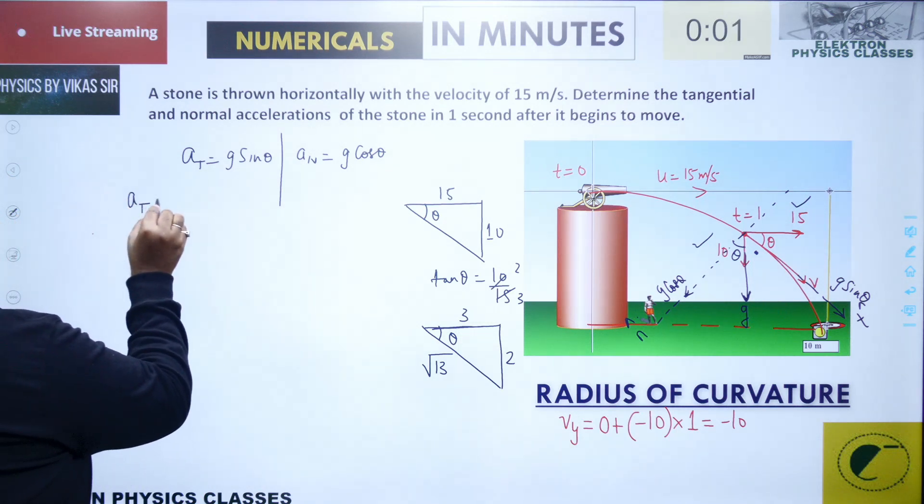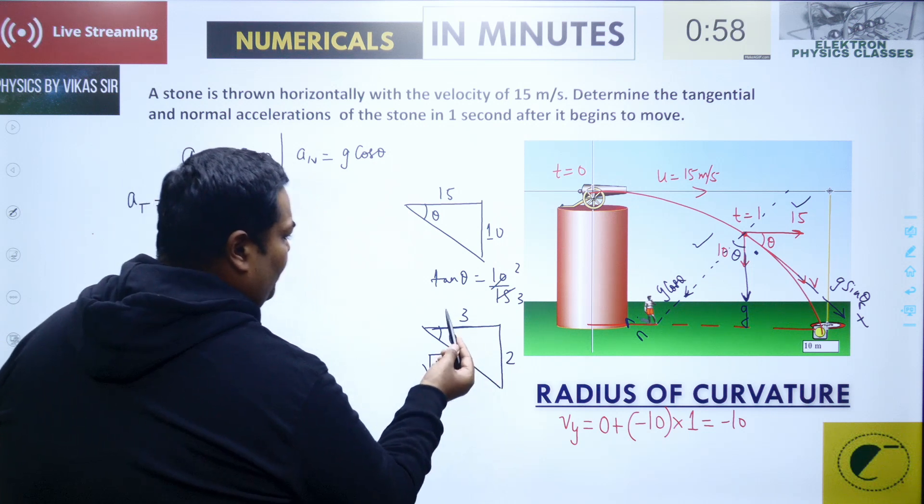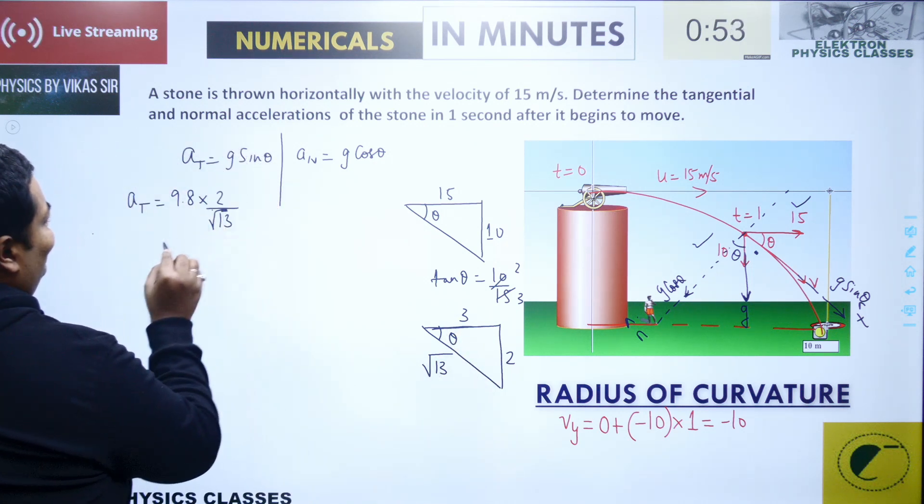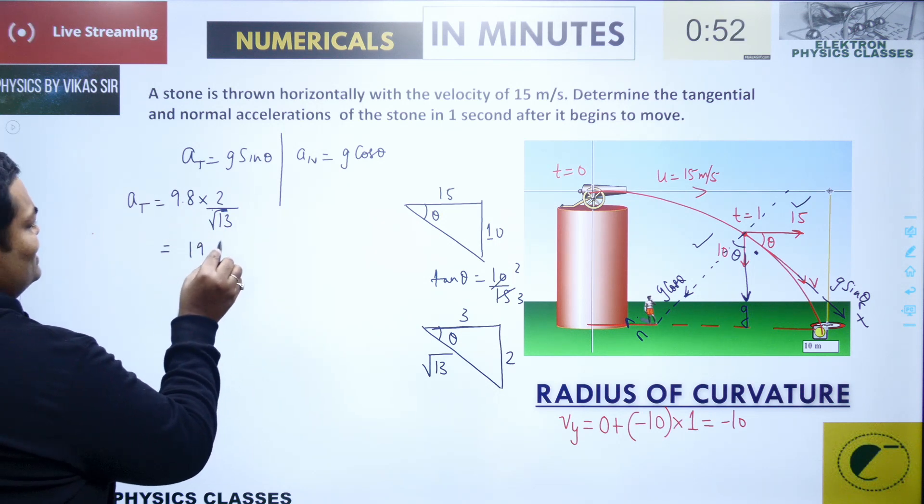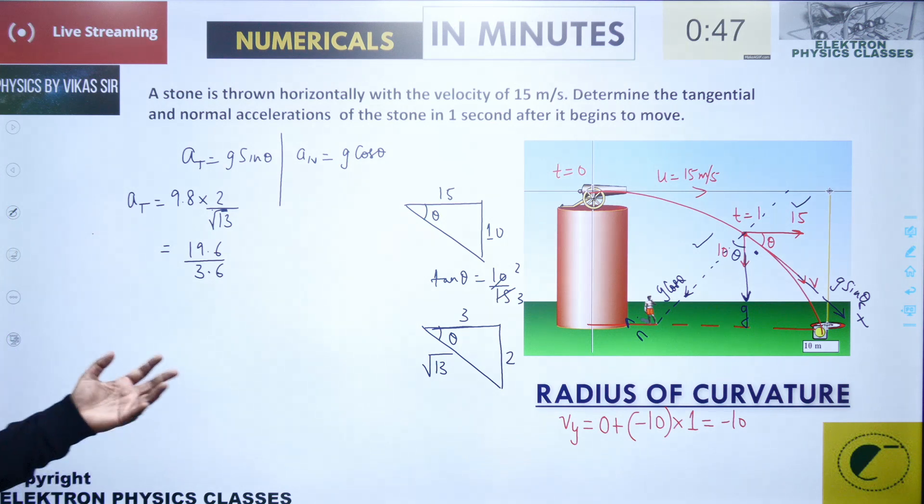So that is 9.8 into sin theta. Sin theta from here is 2 upon root 13, so into 2 upon root 13. That's around 19.6 divided by root 13, which is around 3.6.